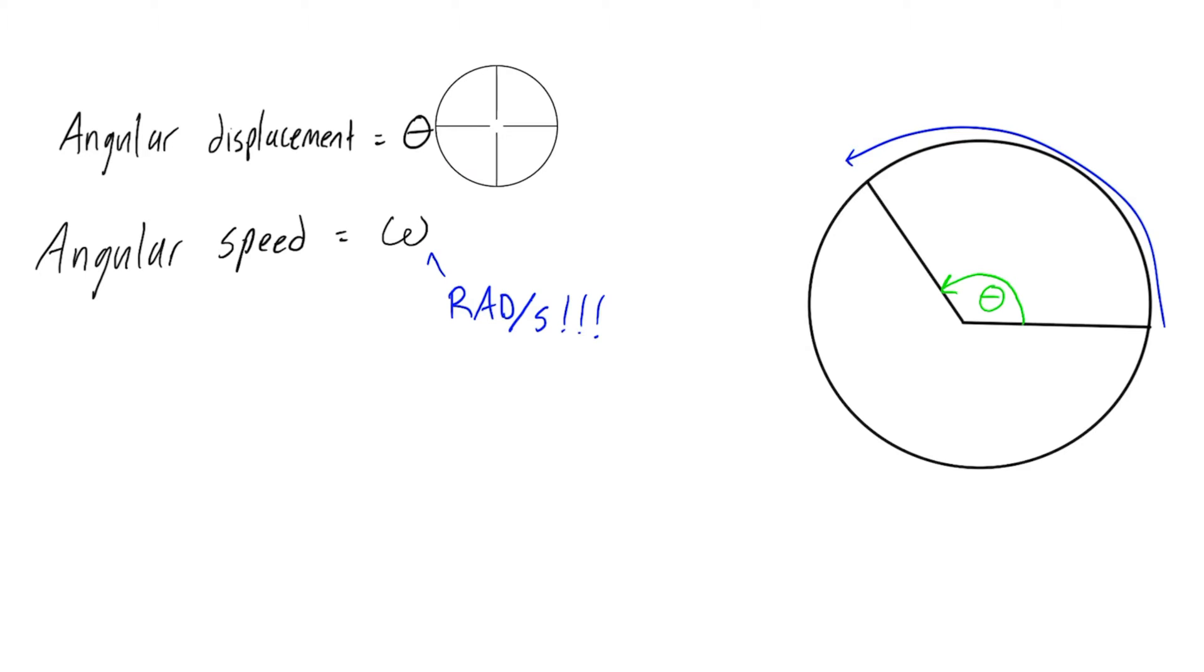It could be more than one revolution or it could be a partial revolution. Angular speed is the rate at which angular displacement is changing, and the most basic way that we can write it is 2π times the frequency.